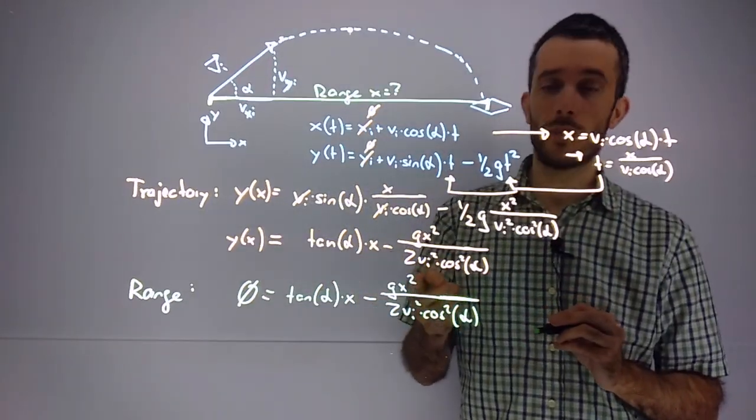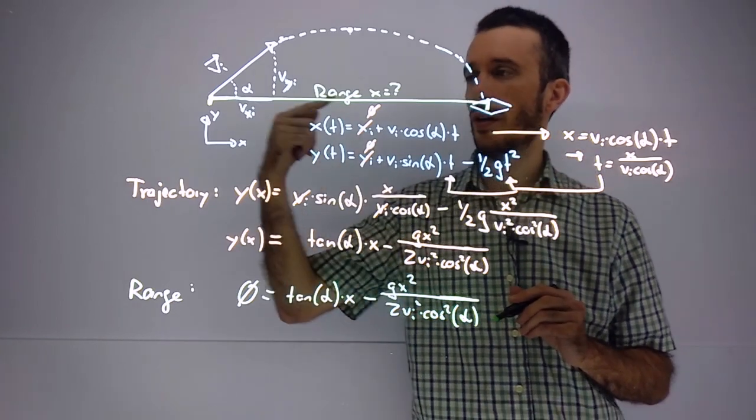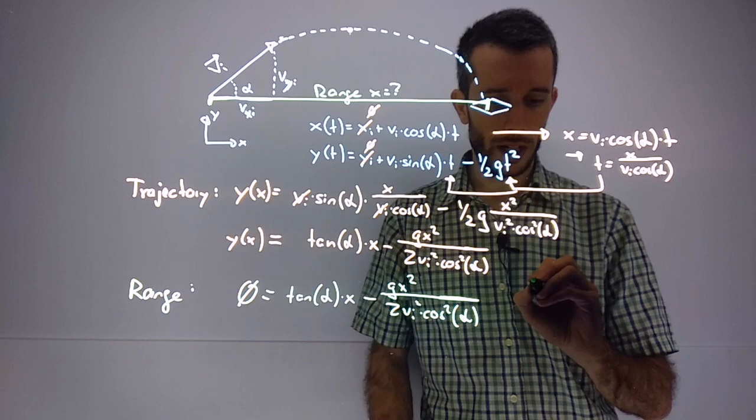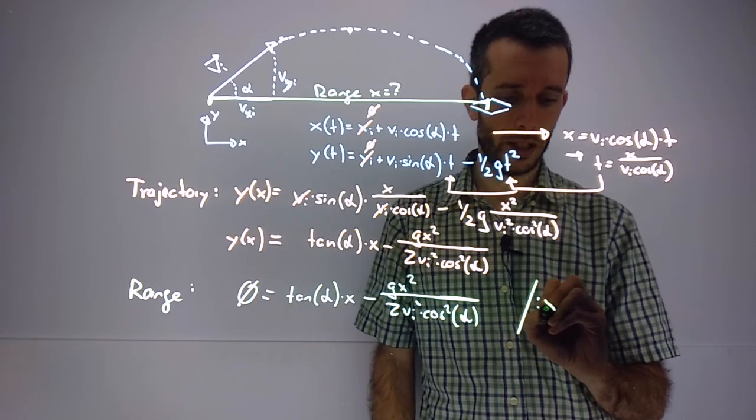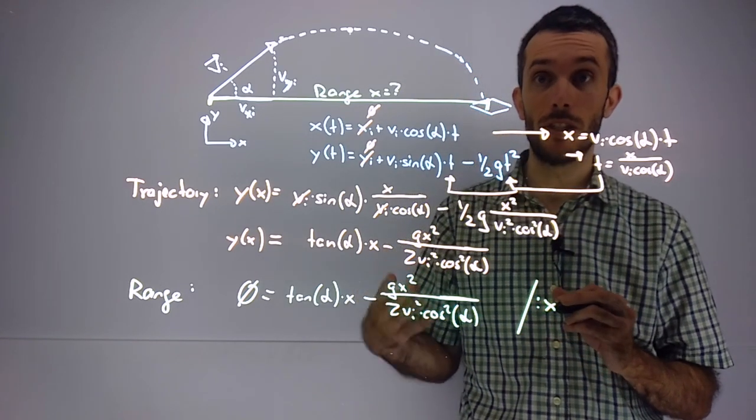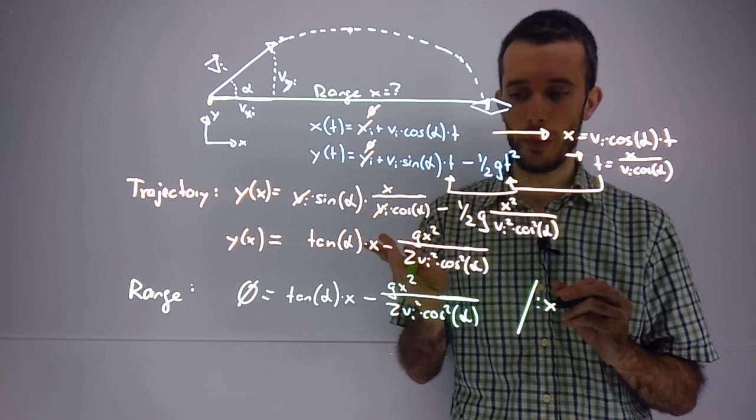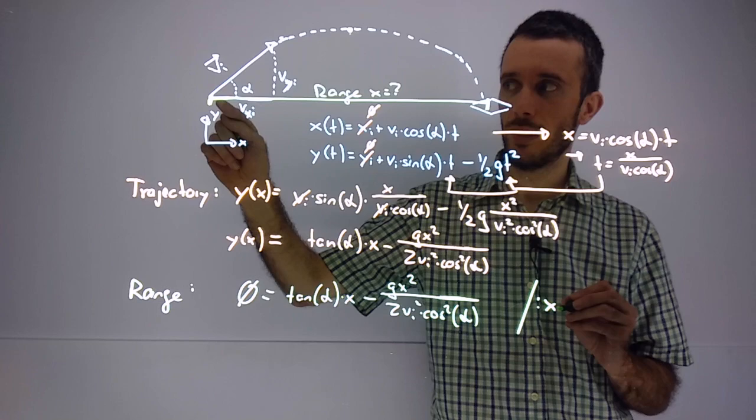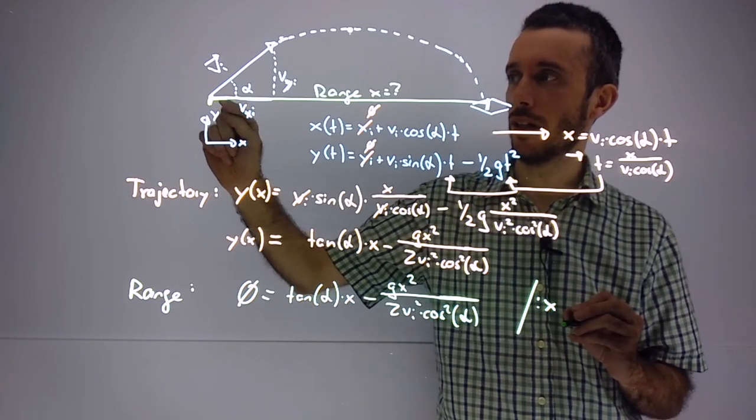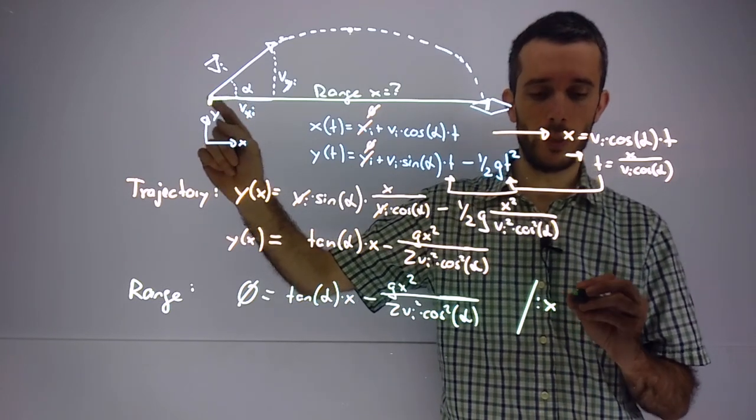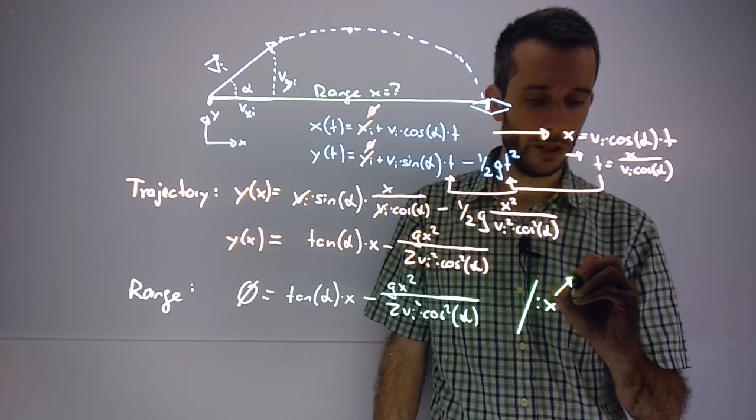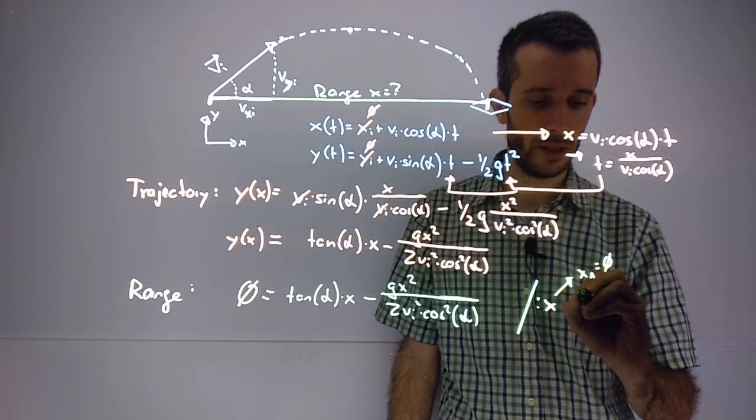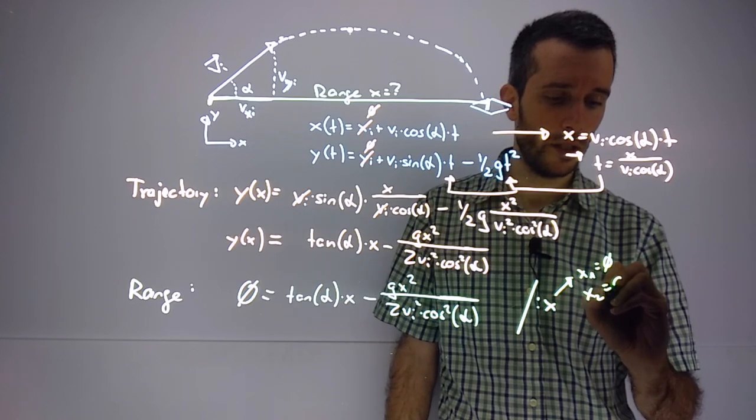Now you see that I have the term x². If I'm starting from ground and going back to ground, I can actually divide by x. This is something that every mathematician will tell you should never do—divide by x because x could be 0. In this case, let's do it anyway because we know that x equals 0 is our initial position, so we know that we're not losing that equation.